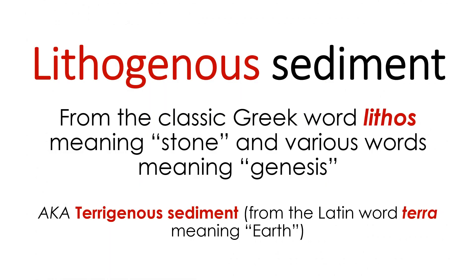Lithogenous sediment consists of particles derived from pre-existing rock. The name lithogenous is derived from the classic Greek word lithos, meaning stone, and words meaning genesis or origin — lithogenous sediment is generated from stone. It is also known as terrigenous sediment, a term from the Latin word terra, meaning earth. Lithogenous sediment comes from the earth.